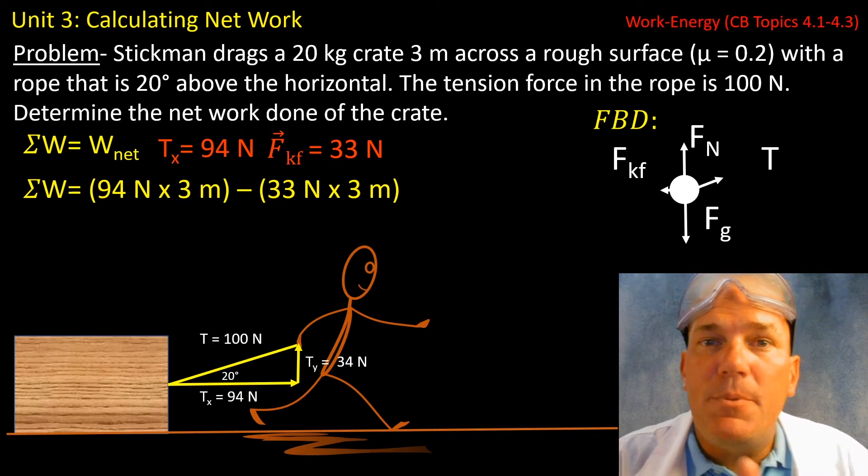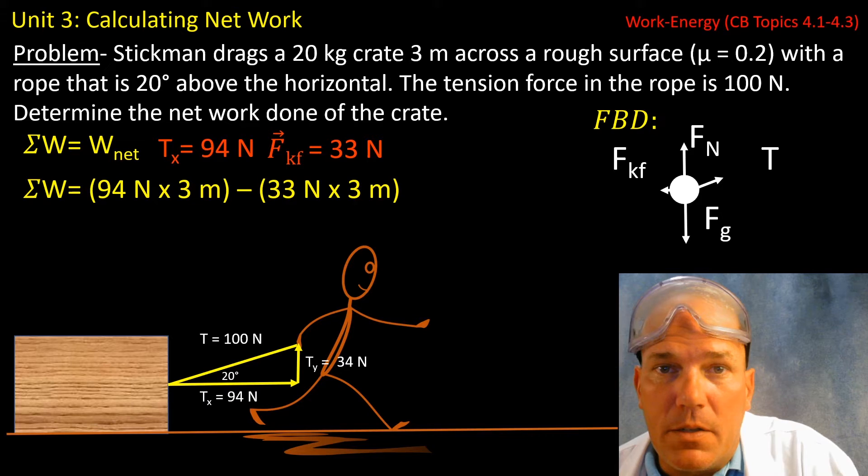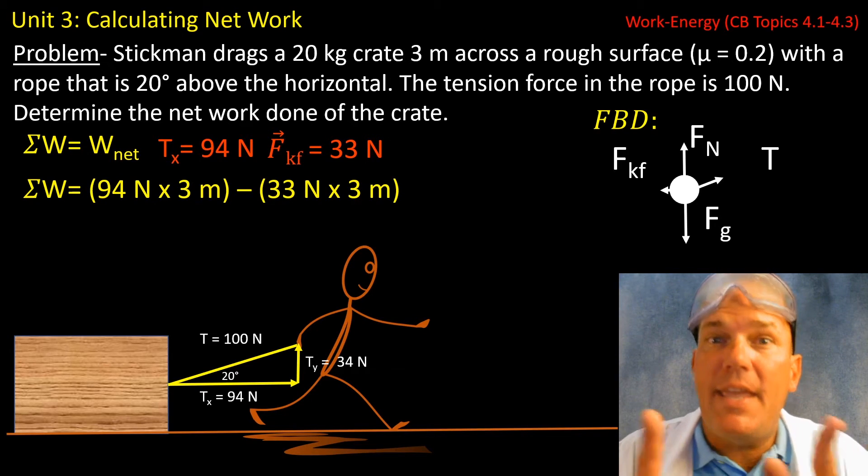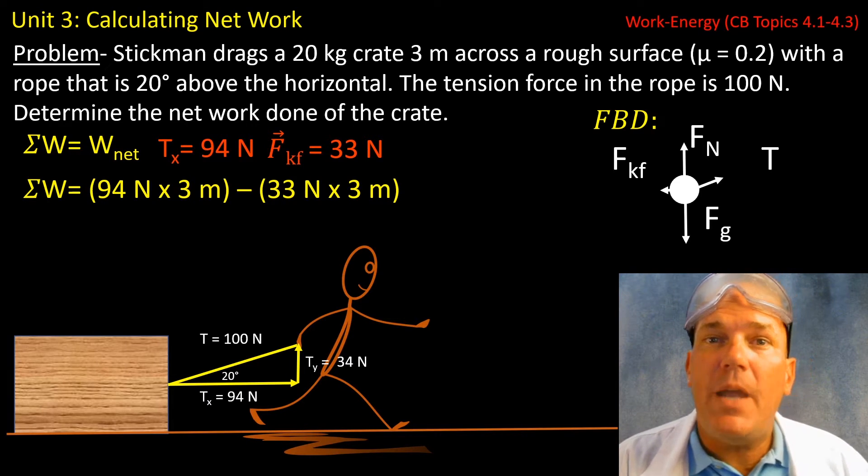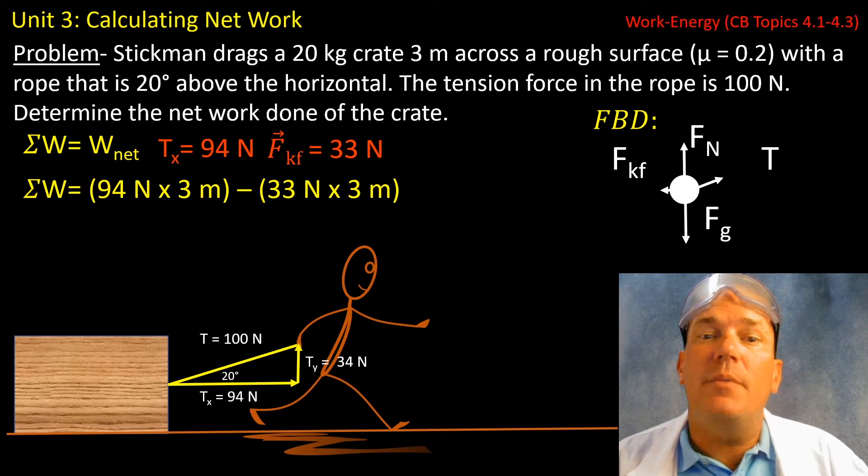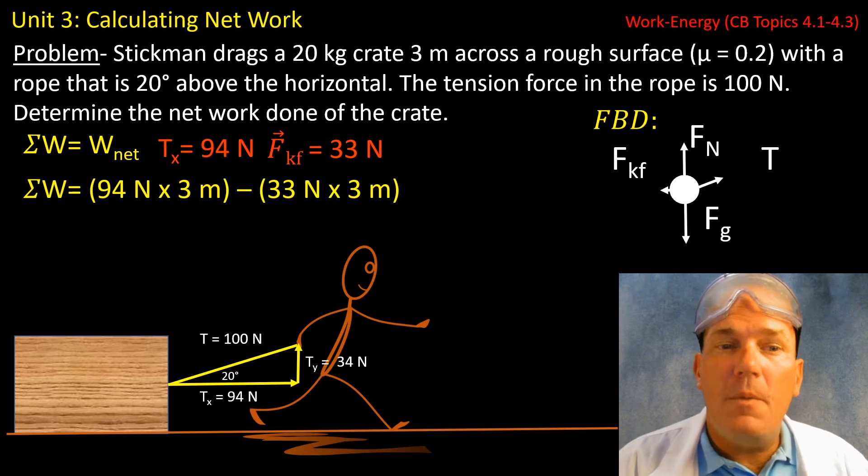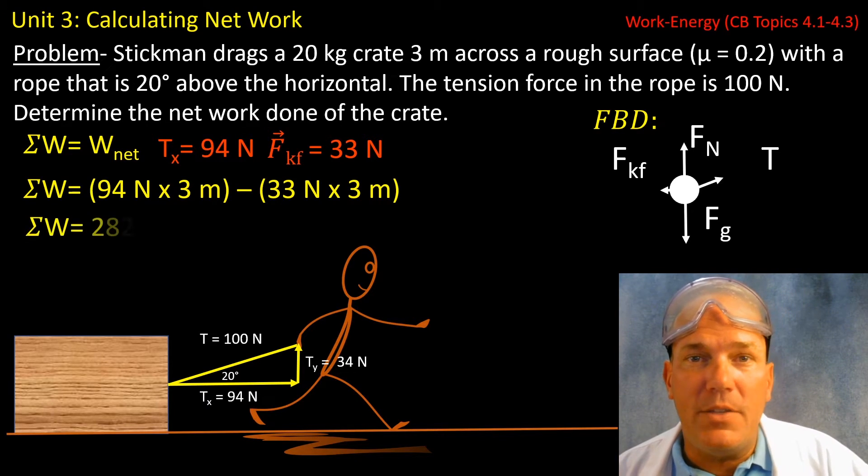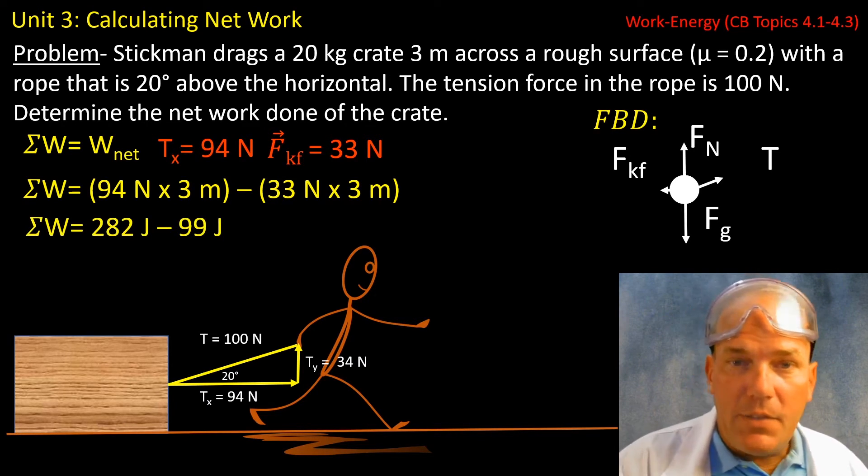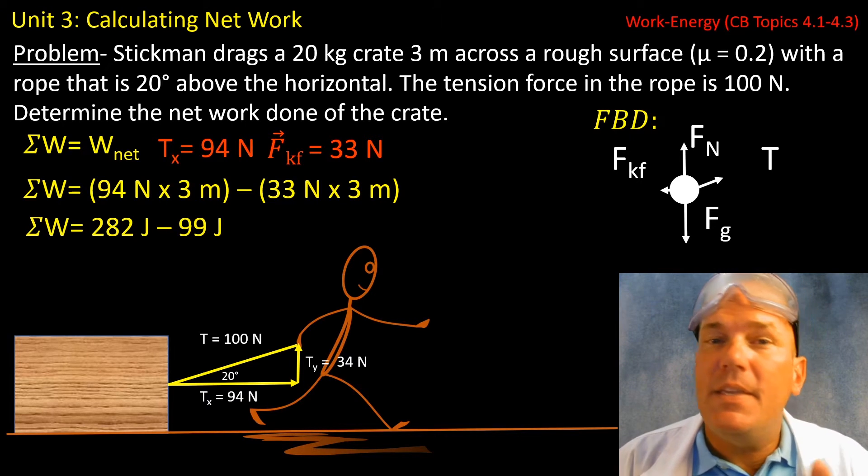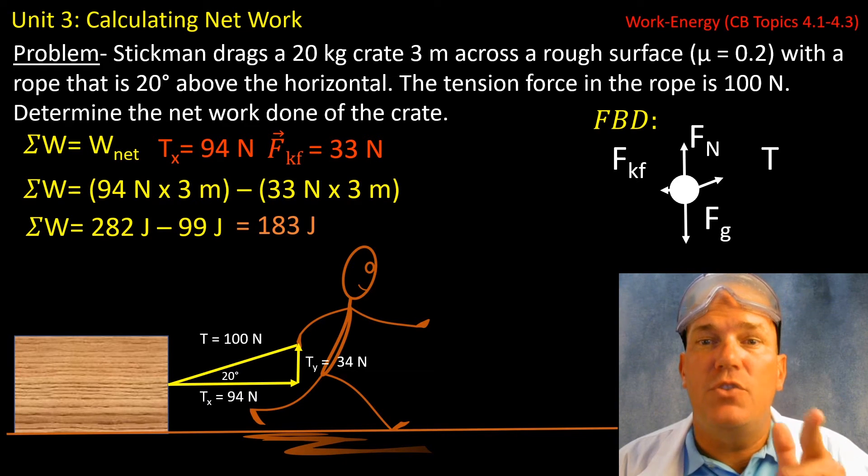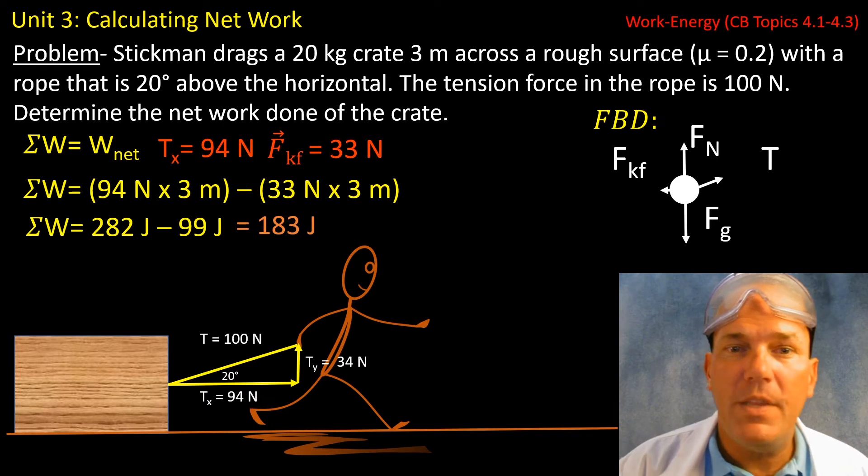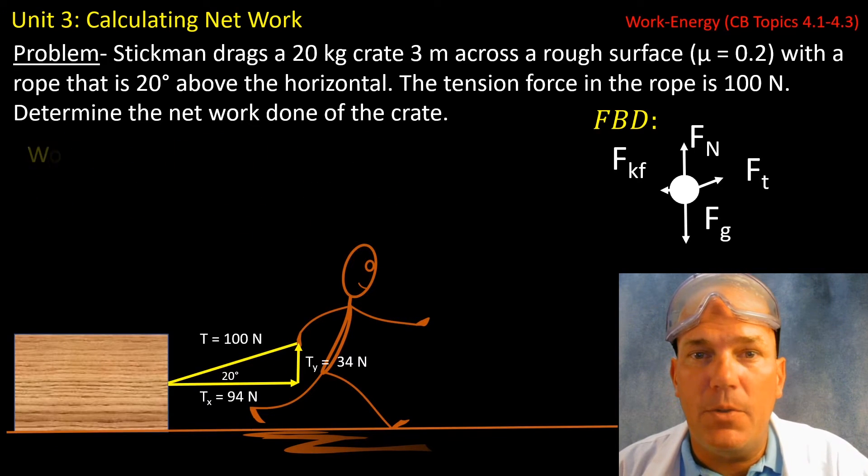And I'm subtracting the negative work. I could also add a negative work value, same thing, just like when we sum forces. So I'm subtracting 33 newtons times 3 meters from my work done in the right direction. Guess what I get? I get the exact same answer of positive 183 joules for the net work done onto the crate.